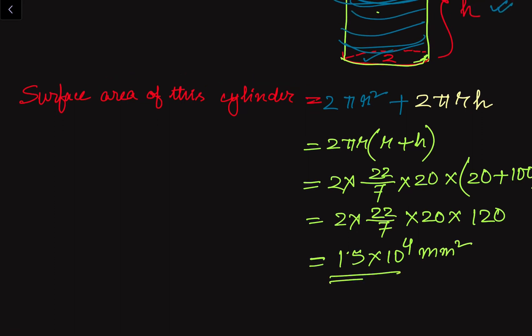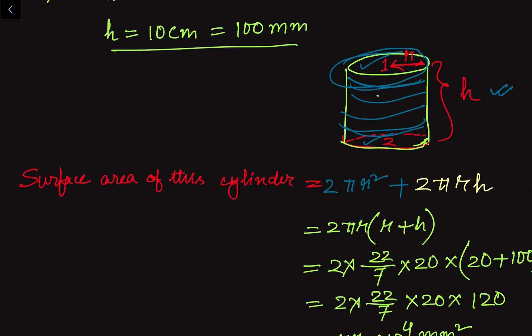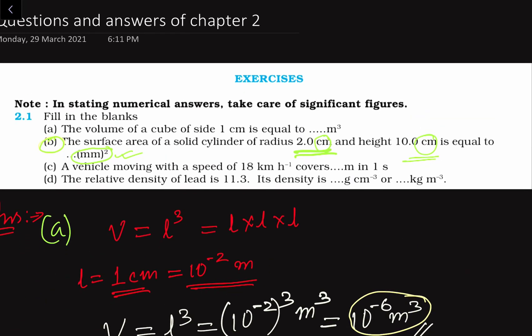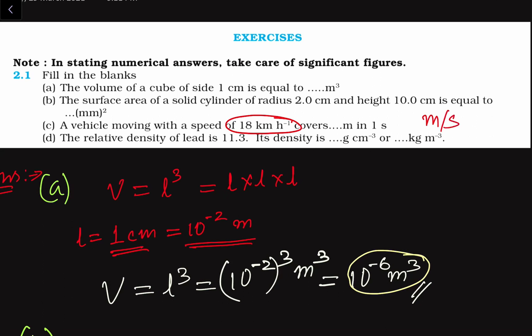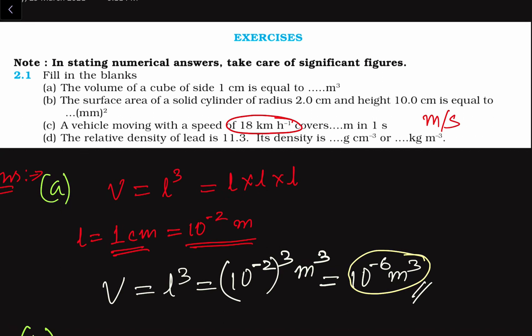So the surface area of the cylinder is 1.5 × 10⁴ mm². Put this value in the second blank space. Now let's go to the third part of the problem. We have a vehicle moving with a speed, and we have to find the speed in meter per second.